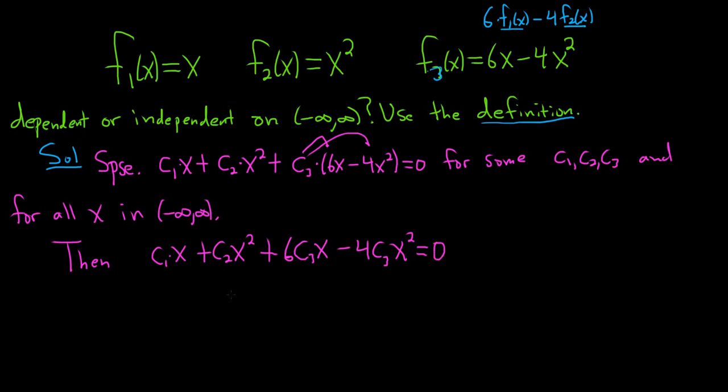All right, then you want to group stuff together. So like, group your x's, group your x squareds. So I guess we can group this and this. We can write it as c1 plus 6c3x. That's a better three. Success. And then we can take this one and this one and write it as c2 minus 4c3x squared. And this is equal to 0.